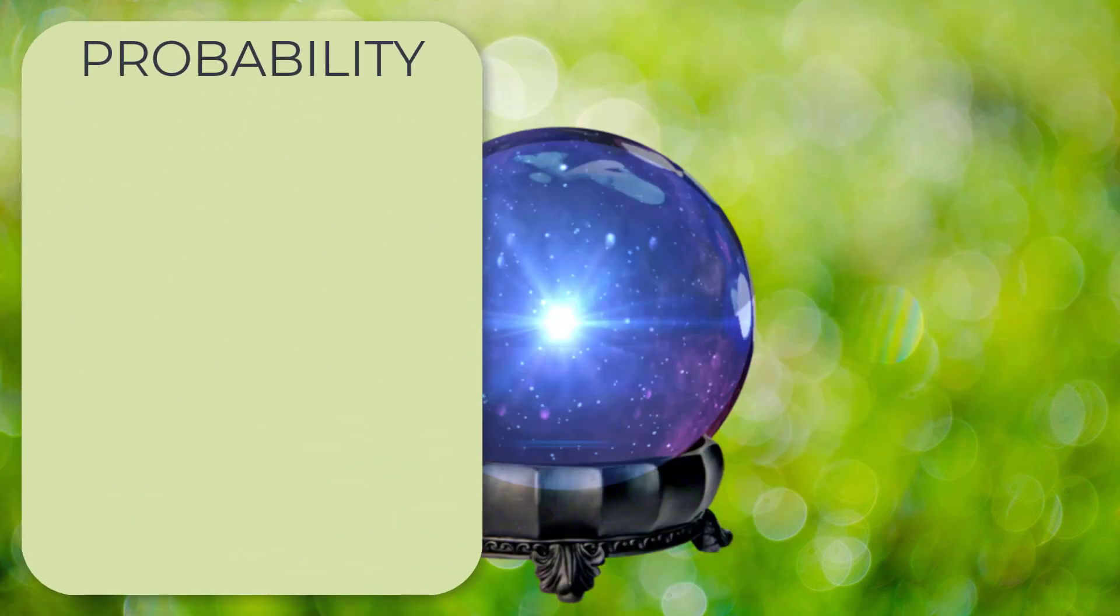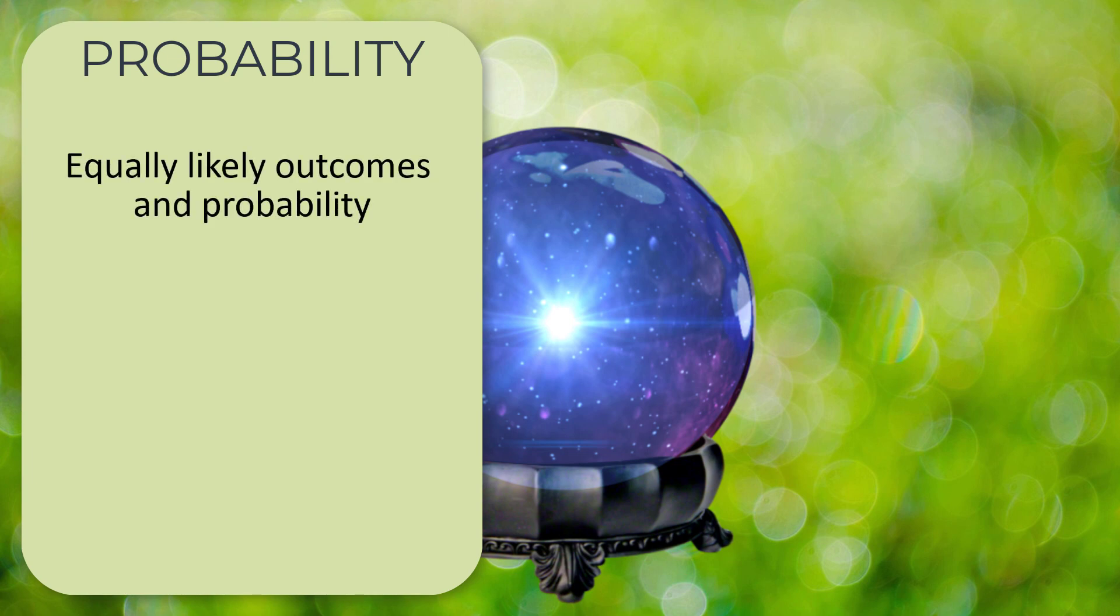Next up we've got probability. Quite a lot of probability on this one. First up we've got equally likely outcomes and probability. So they're the sort of things where you know if you roll a dice, each side has got equal likely chance of success. So kind of simple straightforward probability, combining those, maybe grouping outcomes together, that sort of thing.